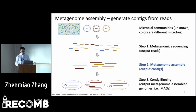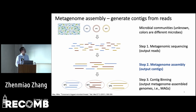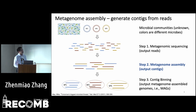Let's move on to the background. Metagenome assembly is one of the main steps to reconstruct metagenome-assembled genomes from unknown microbiome communities. There are three standard steps to generate these MAGs. The first step is metagenomic sequencing, which generates sequencing reads from the unknown microbiome communities. The next step is metagenome assembly to concatenate read sequences into longer, non-overlapping sequences called contigs.